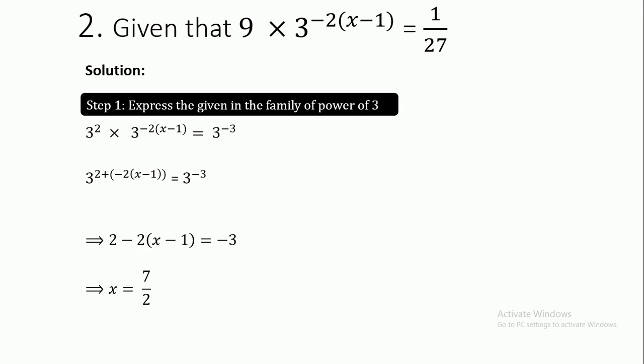We can express 27 as a power of 3. We have 3^2 = 9, and 3 raised to various powers. So: 3^2 × 3^(-2(x-1)) = 3^(-3).